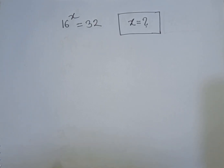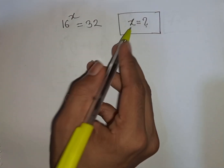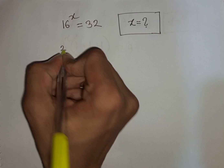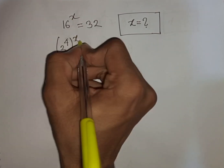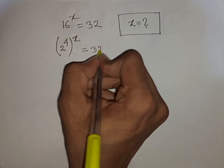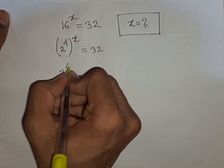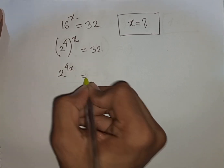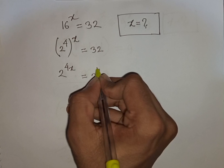How to solve 16 power x is equal to 32. Find the value of x. We have 16 power x, which is the same as 2 power 4, bracket power x, is equal to 32. Now 2 power 4 times x means it will be 2 power 4x, and 32 can be written as 2 power 5.